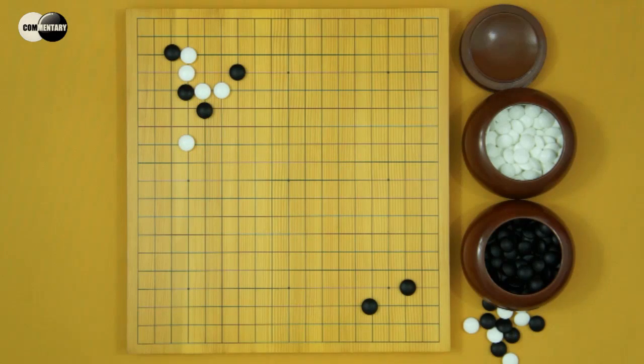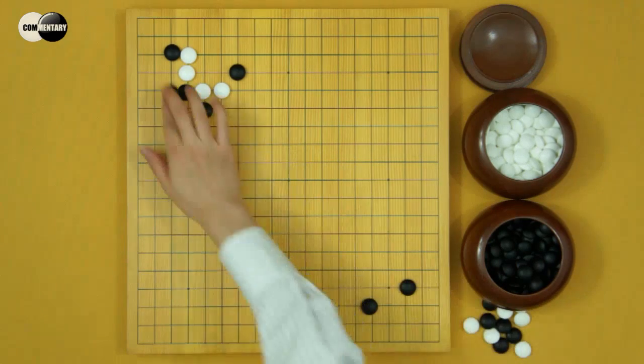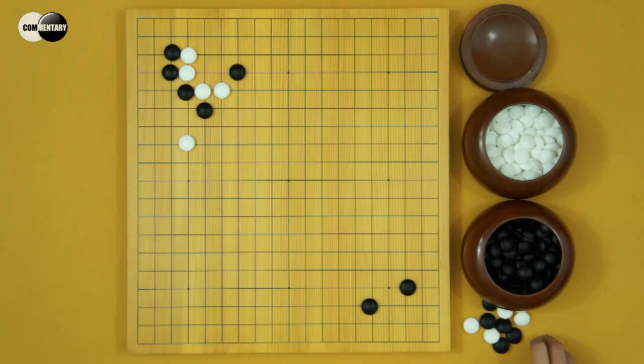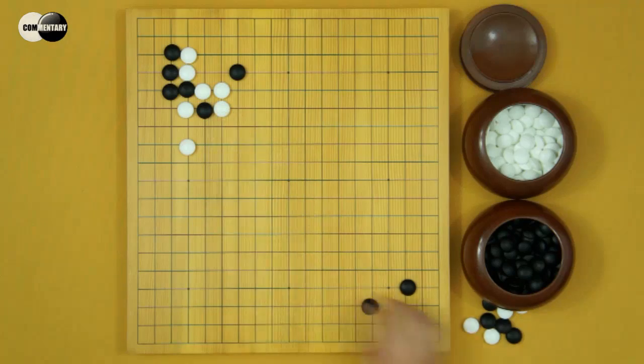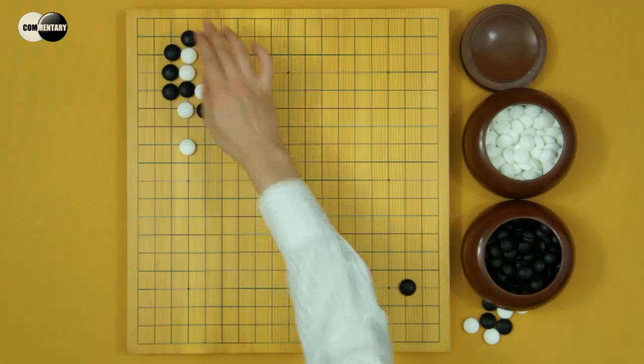Your White bumps. Black blocks. White atari. Black connects. White atari. Black hane.